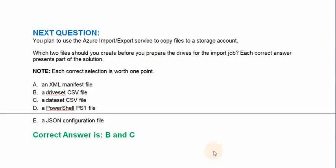You plan to use the Azure import-export service to copy files to a storage account. Which two files should you create before you prepare the drives for the import job? Each correct answer presents a part of a solution. Option A: An XML manifest file. Option B: A drive set CSV file. Option C: A dataset CSV file. Option D: A PowerShell PS1 file. Option E: A JSON configuration file. The correct answer is Option B and C.